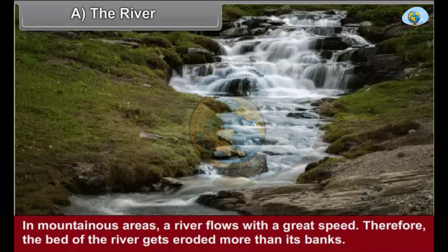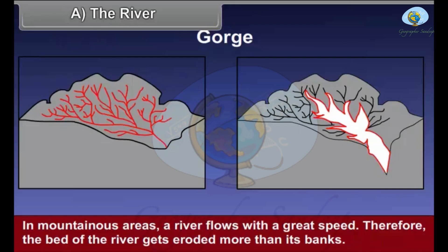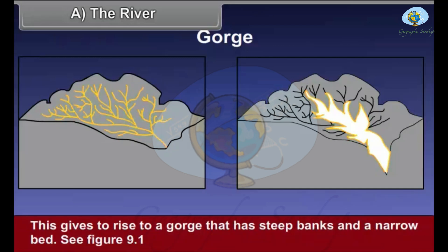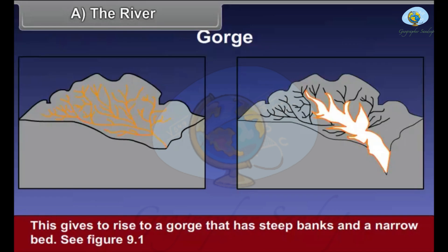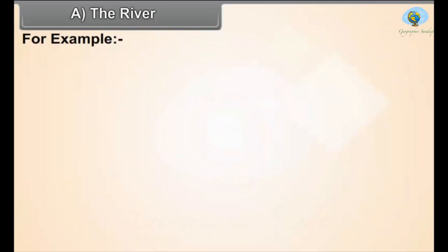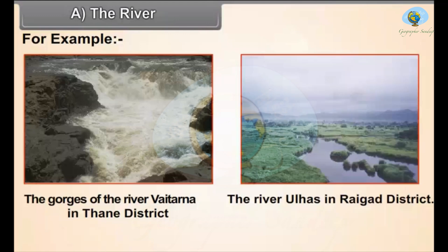Gorge: In mountainous areas a river flows with great speed, therefore the bed of the river gets eroded more than its banks. This gives rise to a gorge that has steep banks and a narrow bed. For example, the gorges of the river Vaitarna in Thane district and the river Ulhas in Raigad district.